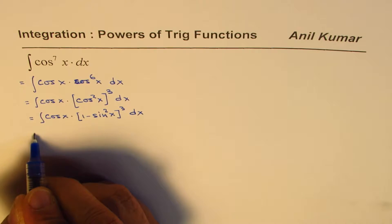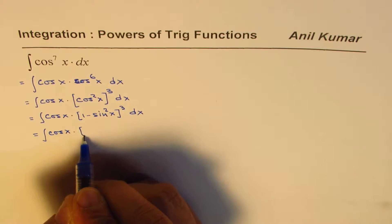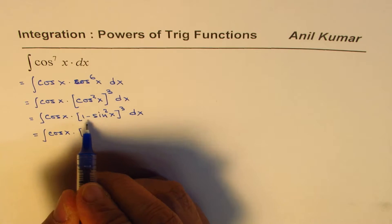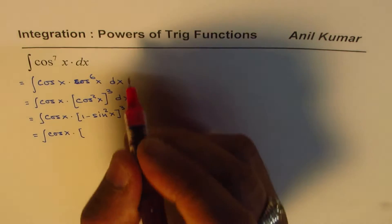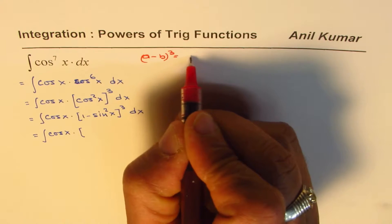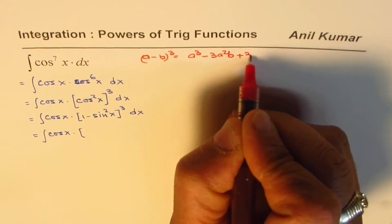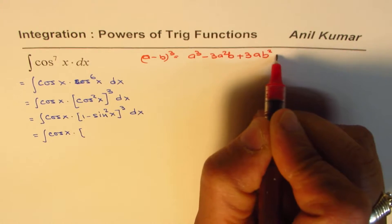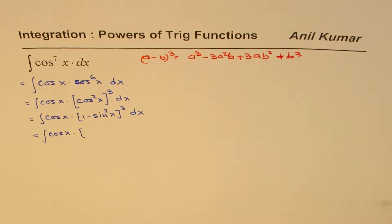Now, this cube could be expanded. So we get cos x, the formula a cube minus b cube. Let me write down the formula for you here. So if I have a minus b whole cube, it could be written as a cube minus 3 a square b plus 3 a b square minus b cube. So we'll apply this formula and expand.